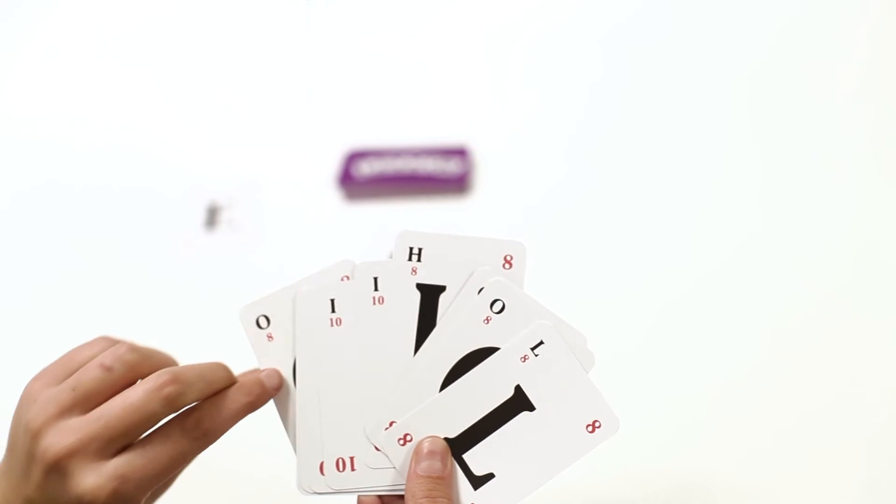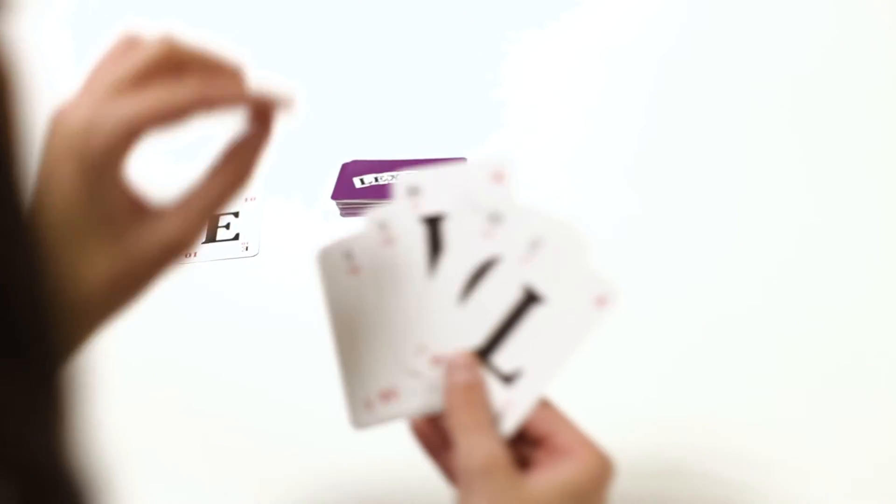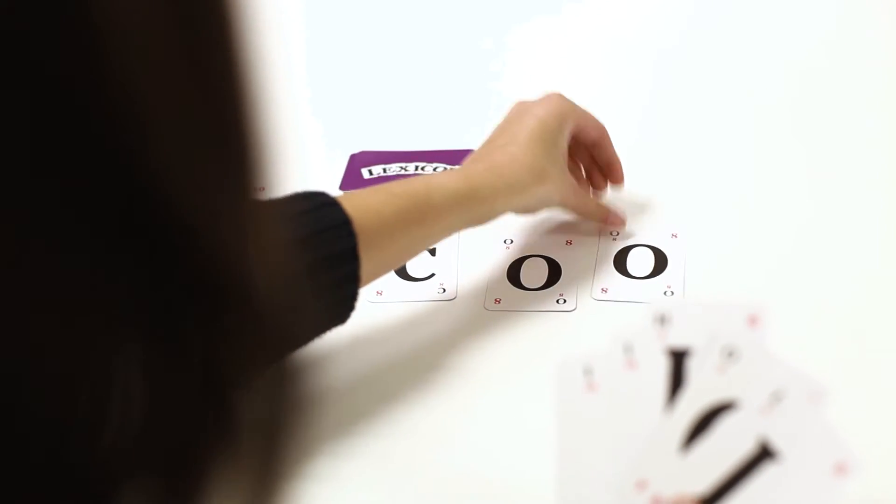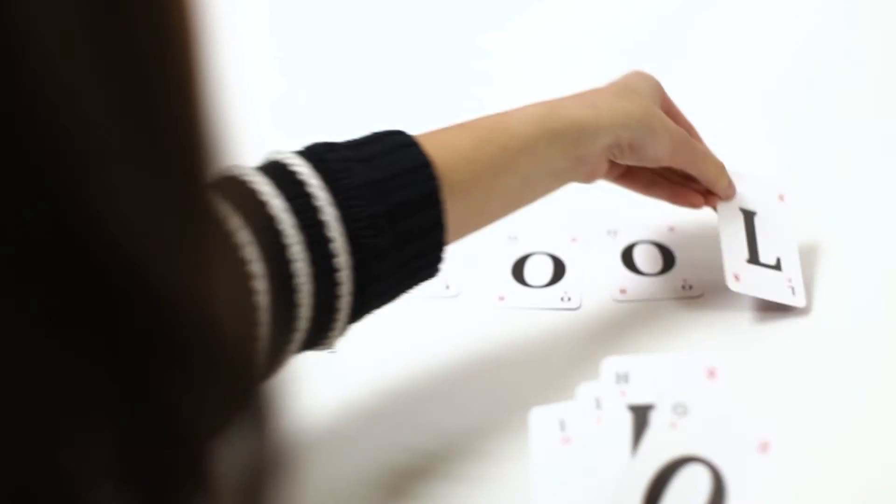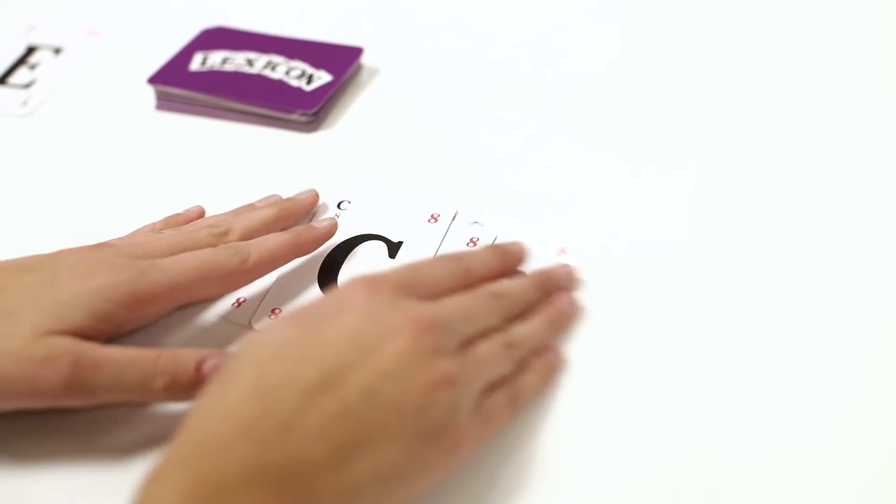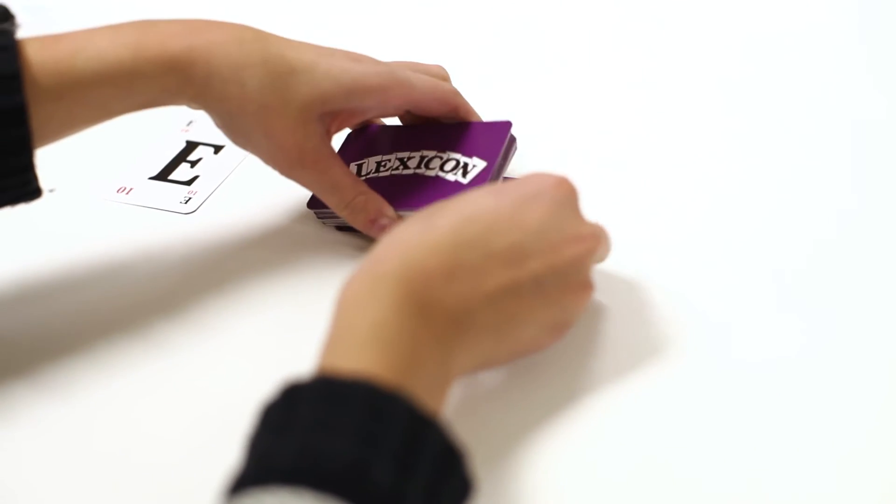The next player must also place two or more cards to continue building a word. If a player can form a whole word using any of the cards in their hand and those on the table, the cards used are gathered together and placed under the draw pile. Used face up cards are then replaced.